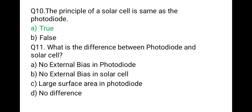The next question: what is the difference between a photodiode and a solar cell? Both have the same principle — both convert solar or light energy into electrical energy. However, the difference is that a solar cell does not require an external bias, but a photodiode requires an external bias. So option B is correct: no external bias in a solar cell.